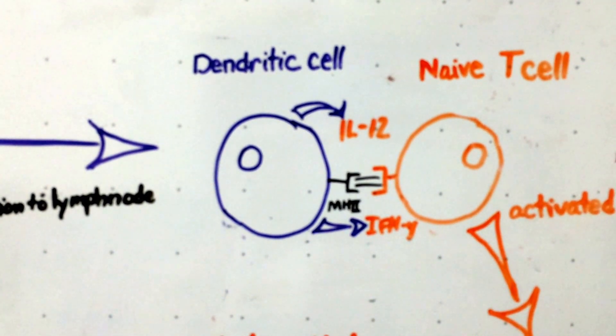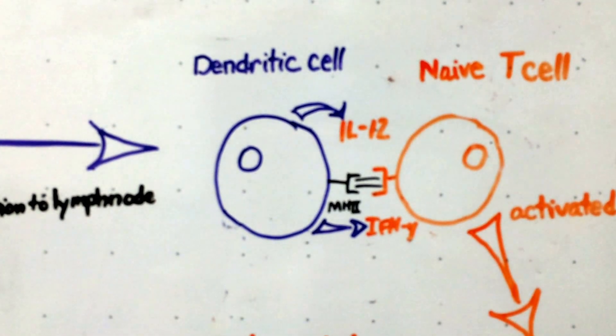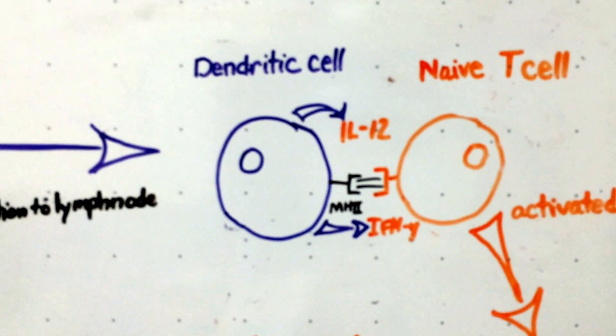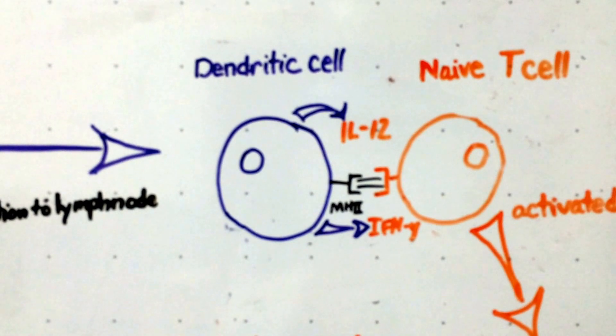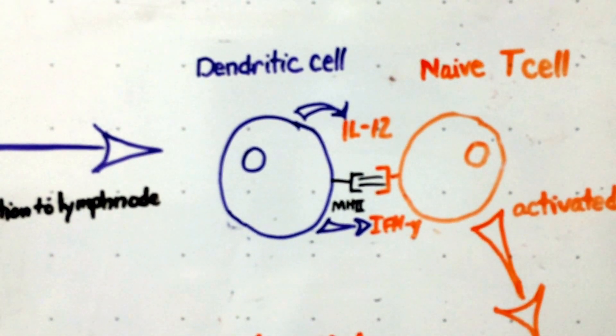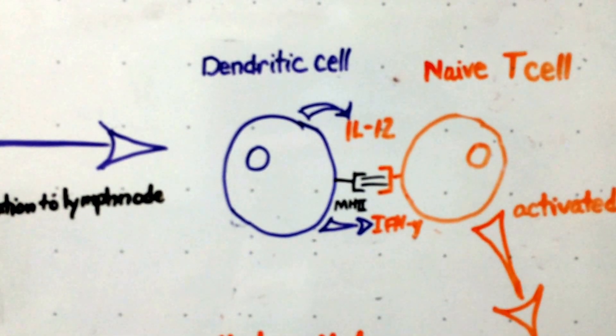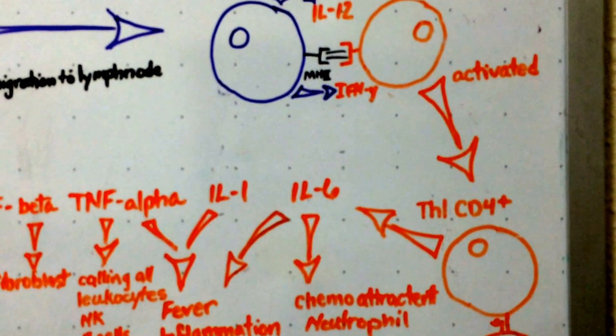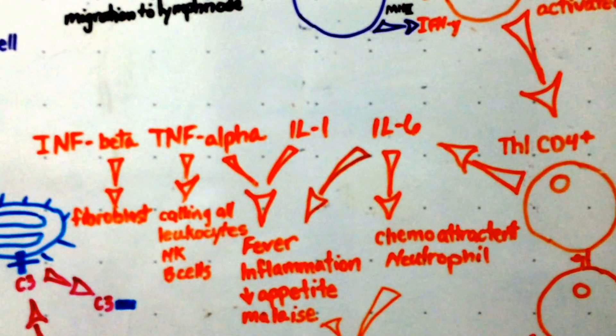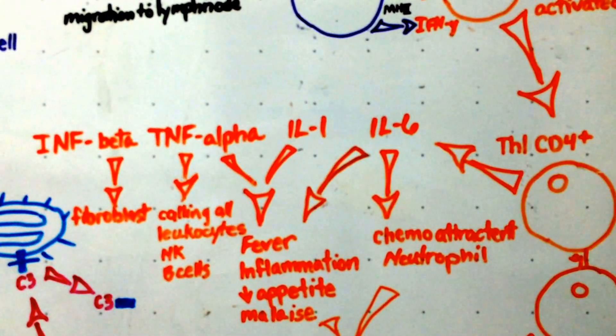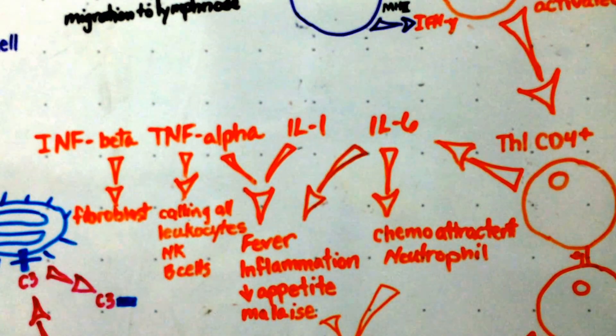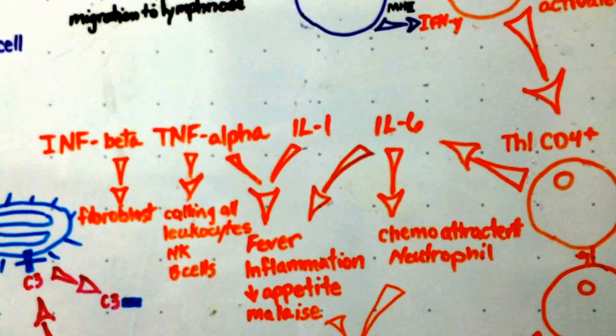And interacting with the naive T cell, releasing cytokines. The MHC2 is used to transfer this information to the naive T cell. Now, these cytokines and the MHC2 cause this naive T cell to be a Th1 CD4 cell. So it's the MHC2 that causes it to be a CD4 cell and the cytokines released that cause it to be a Th1 cell.